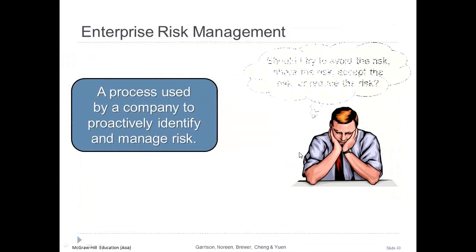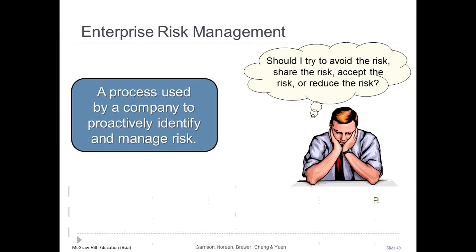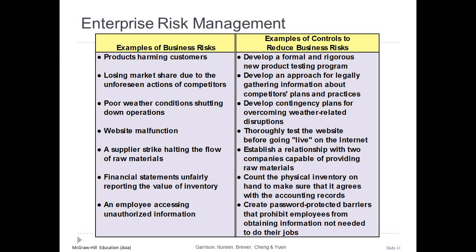Enterprise risk management is a process used by a company to proactively identify and manage the risks it faces. The most common risk management tactic is to reduce risks by implementing specific controls. Examples of business risks include products harming customers, losing market share, poor weather conditions, malfunction of a website, supplier strikes, financial statements unfairly reporting inventory value, and employees accessing unauthorized information.